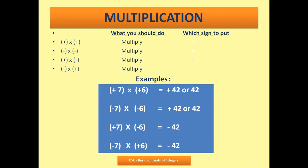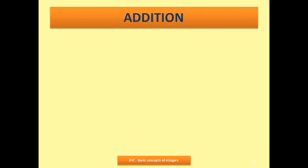Whenever there is any operation, first see what you have to do. For multiplication, it is simple: just multiply and know your tables — then which sign to put is the most important thing. When both are positive or both are negative, put the positive sign. When one positive and one negative, put the negative sign. Now let us understand the addition rules.